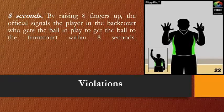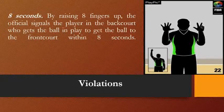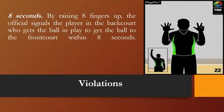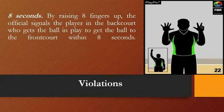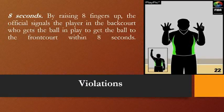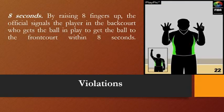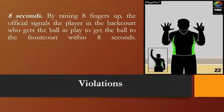Another violation is eight seconds. By raising eight fingers, the official signals that the player in the backcourt must get the ball into the frontcourt within eight seconds. Once a player inbounds the ball and receives it, while dribbling they must pass the center line to the frontcourt. Holding or dribbling the ball in the backcourt for more than eight seconds results in this violation.